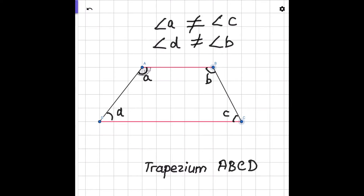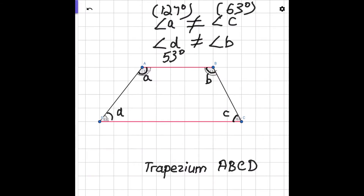Angle A is equal to 127 degrees and angle C is equal to 63 degrees, so we can say that they are not equivalent. Now let's find angle D and angle B. Angle D is 53 degrees and angle B is 117 degrees, so again they are not equivalent.